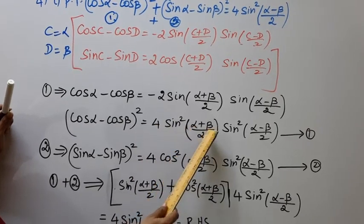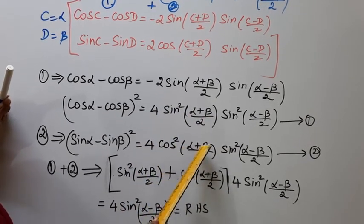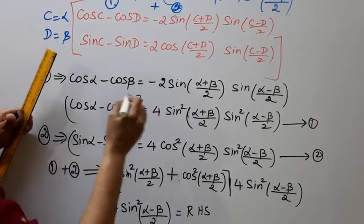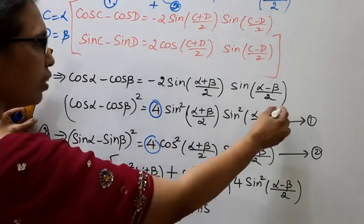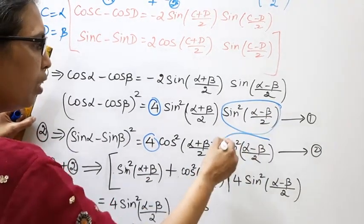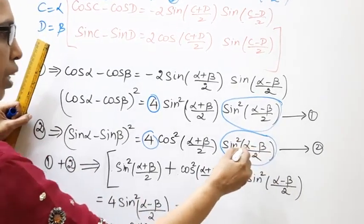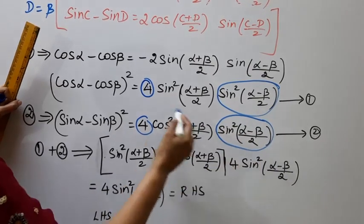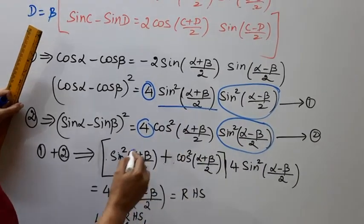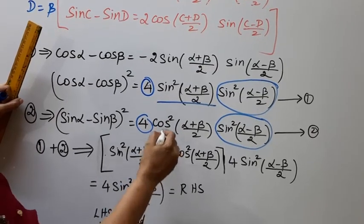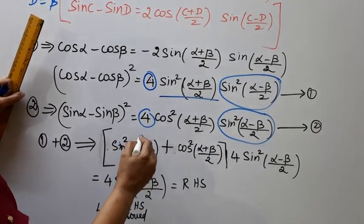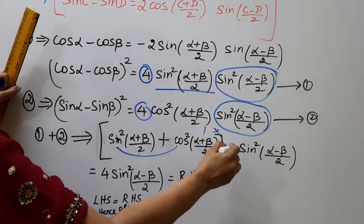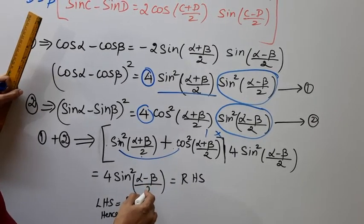We have 4 sin square (α minus β) by 2 multiplied by [sin square (α+β)/2 plus cos square (α+β)/2]. Since sin square theta plus cos square theta equals 1, this simplifies to 4 sin square (α minus β) by 2 multiplied by 1.